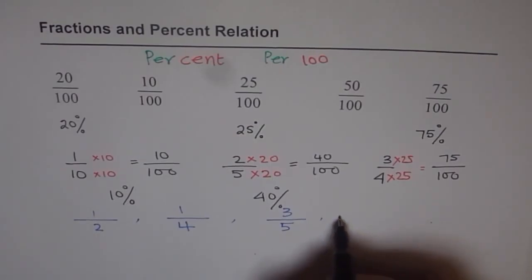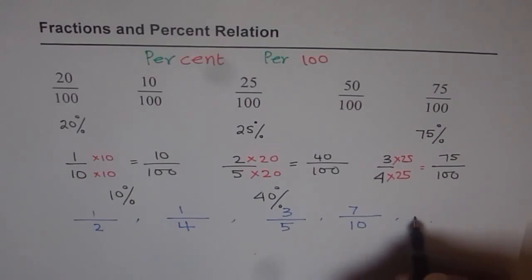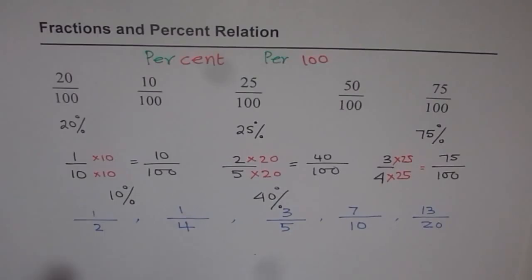You write this as a percent. Then with denominator 20, let me write a number 7. And with denominator 20, let me write a number 13, for example. So let that be an exercise for you.